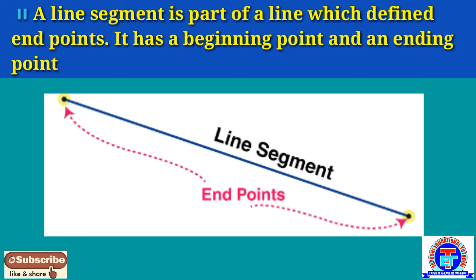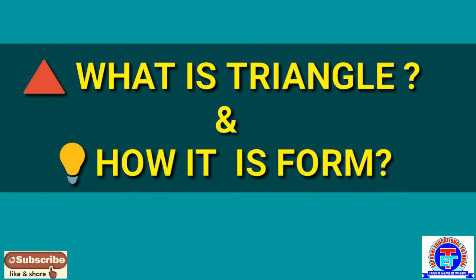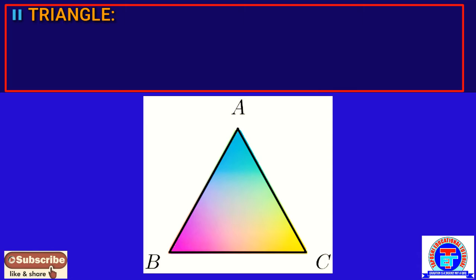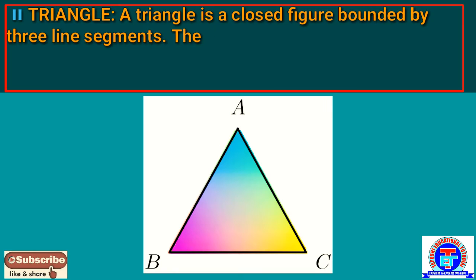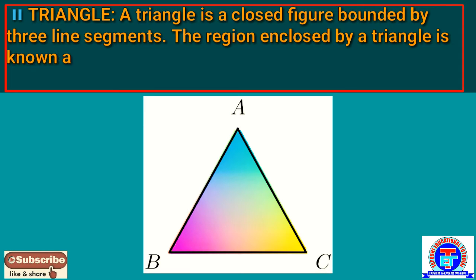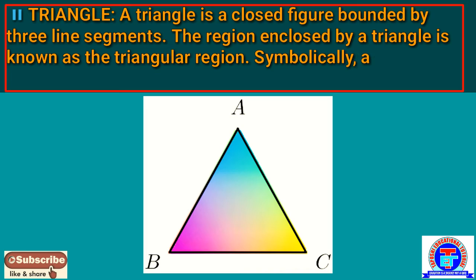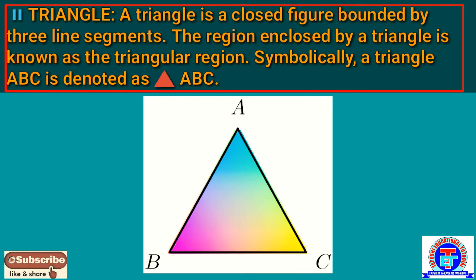So first question: what is a triangle and how is it formed? A triangle is a closed figure bounded by three line segments. In this figure, ABC is a triangle. The region enclosed by a triangle is known as the triangular region. Symbolically, we denote it as △ABC and read it as triangle ABC.